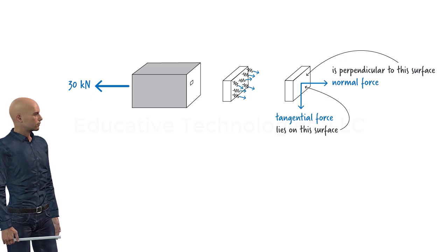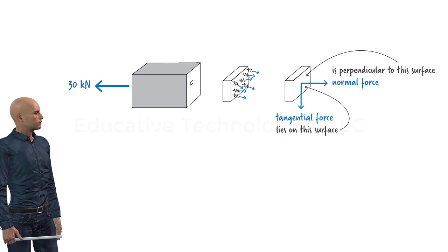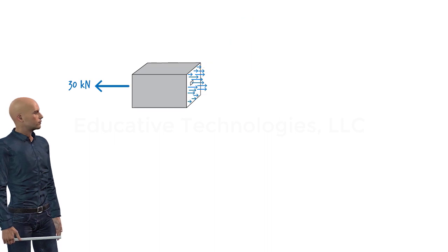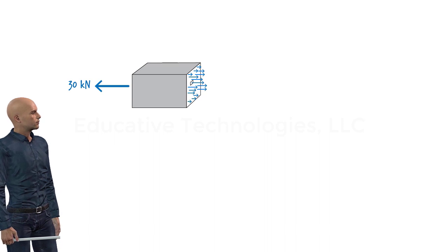Clearly, the cross section of the member consists of many such infinitesimal areas, each having a normal and a tangential force acting on it. I am not drawing the tangential forces here, since for an axially loaded member they are negligible and can be ignored.